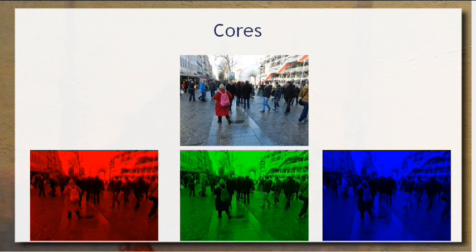Mas as cores que você vê são apenas um pequeno conjunto de cores que, de fato, existem. O espectro é bem mais amplo e há, inclusive, seres vivos que conseguem perceber bem mais cores do que a gente. Você já deve ter reparado isso, por exemplo, para sons — cachorros e morcegos têm uma percepção maior dos sons.